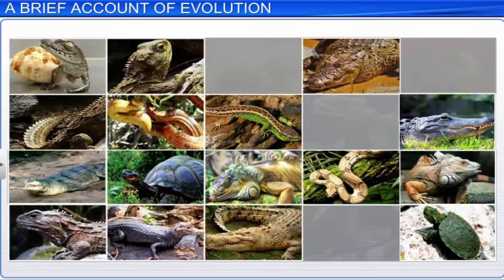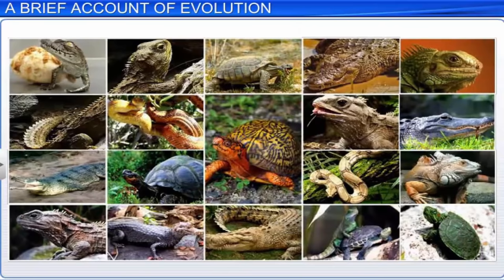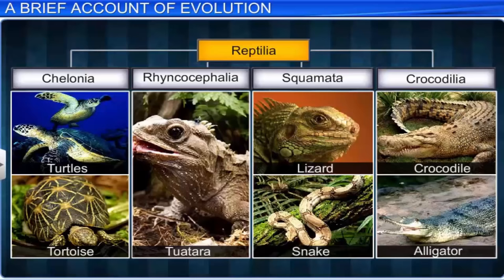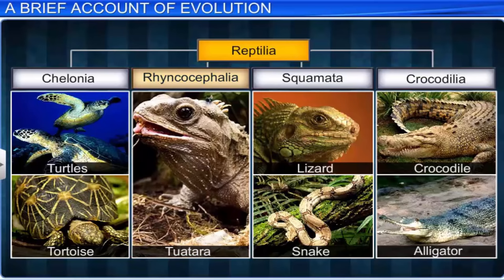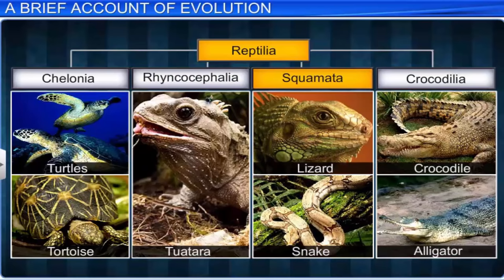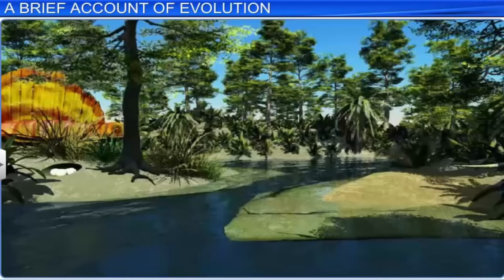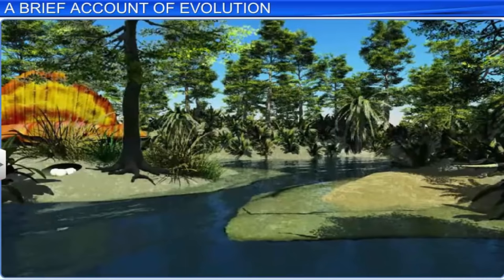Today there are four orders of class reptilia: the first order is Chelonia, which includes turtles and tortoises; the second order Rhynchocephalia includes Tuatara; the third order Squamata includes lizards and snakes; while the fourth order Crocodilia includes crocodiles and alligators. Meanwhile, the plants that existed during the Permian age were ferns.